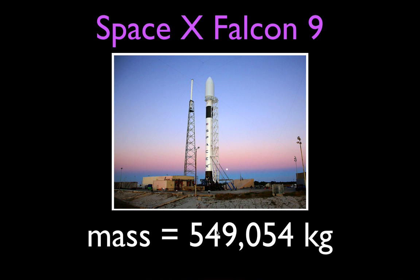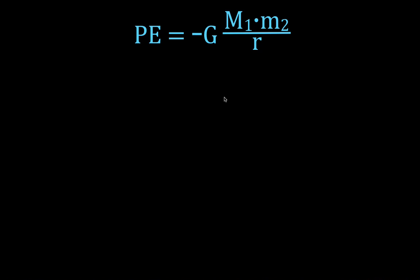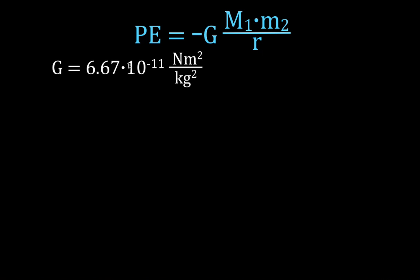This rocket happens to have a mass of 549,054 kilograms. Because this rocket is going to be sent up into space, we're going to be using the more general form of the equation — not PE equals MGH — but the equation that says potential energy is equal to negative G, the gravitational constant, times the mass of one object (the Earth) times the mass of the rocket, divided by the distance between those two objects. The gravitational constant is 6.67 times 10 to the minus 11 newton meter squared per kilogram squared.